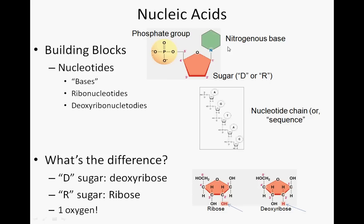This right here is a diagram of a nucleotide. A nucleotide has three pieces to it: a sugar molecule in the middle, a phosphate group up here that's always going to be attached to carbon number five — which is very, very important in biology, we'll learn why later — and something called a nitrogenous base.